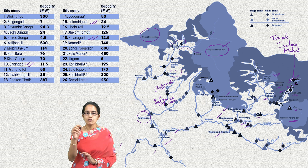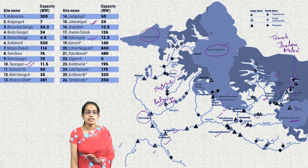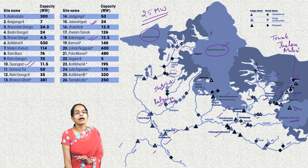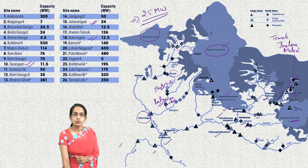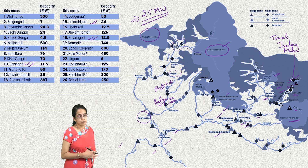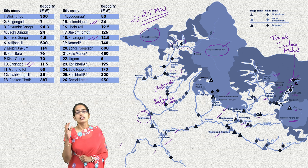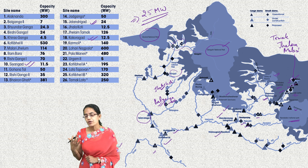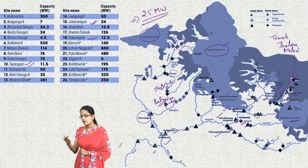These are some of the major projects in the region. An important thing to note is that nearly all projects above 25 megawatts are considered large projects, while those below 25 megawatts are considered smaller dams. All of these exist for the generation of hydroelectric power.